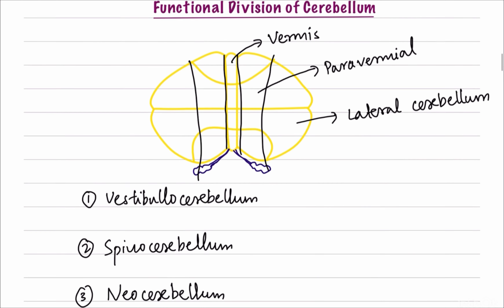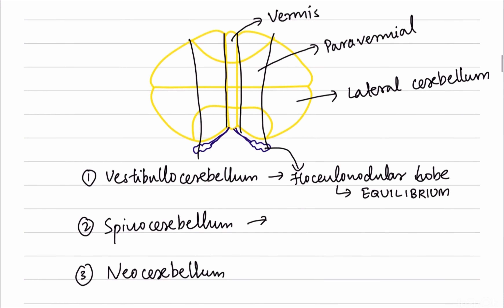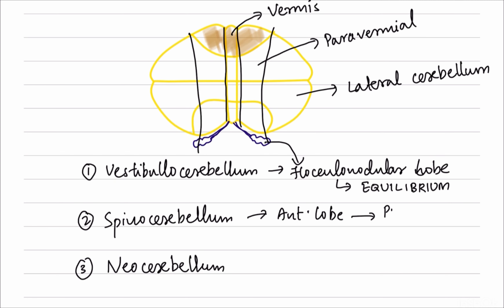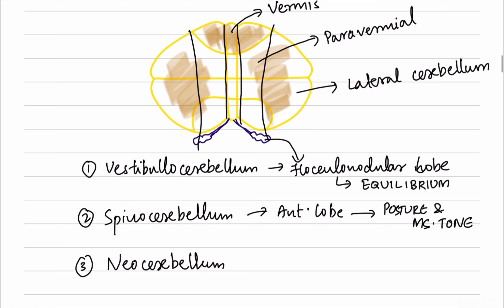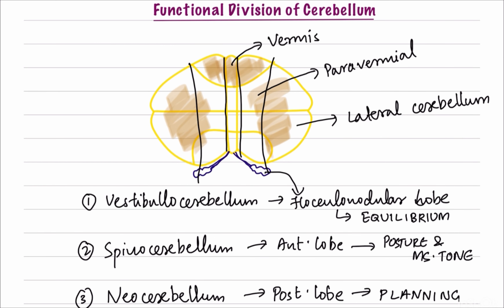These two classifications are related. The vestibulocerebellum corresponds to the flocculonodular lobe and is concerned with maintaining equilibrium. The spinocerebellum involves most of the anterior lobe, receiving fibers from the spinal cord; its function is to maintain posture and muscle tone. The neocerebellum is the lateral part of the cerebellum, related to the posterior lobe, and is concerned with planning and coordination of movements.